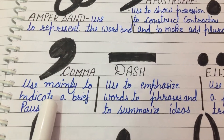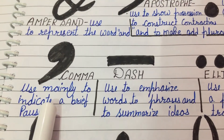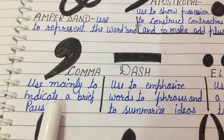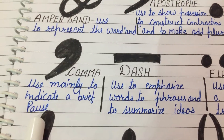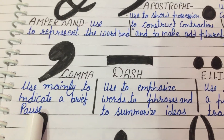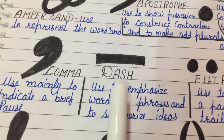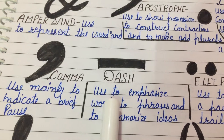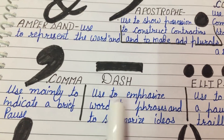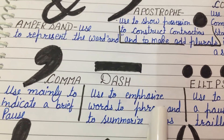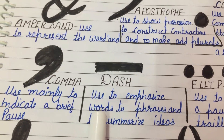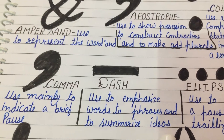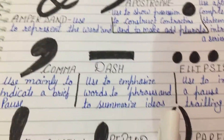And this is a symbol of comma, used mainly to indicate a brief pause. And this is a symbol of dash, used to emphasize words or phrases and to summarize ideas.